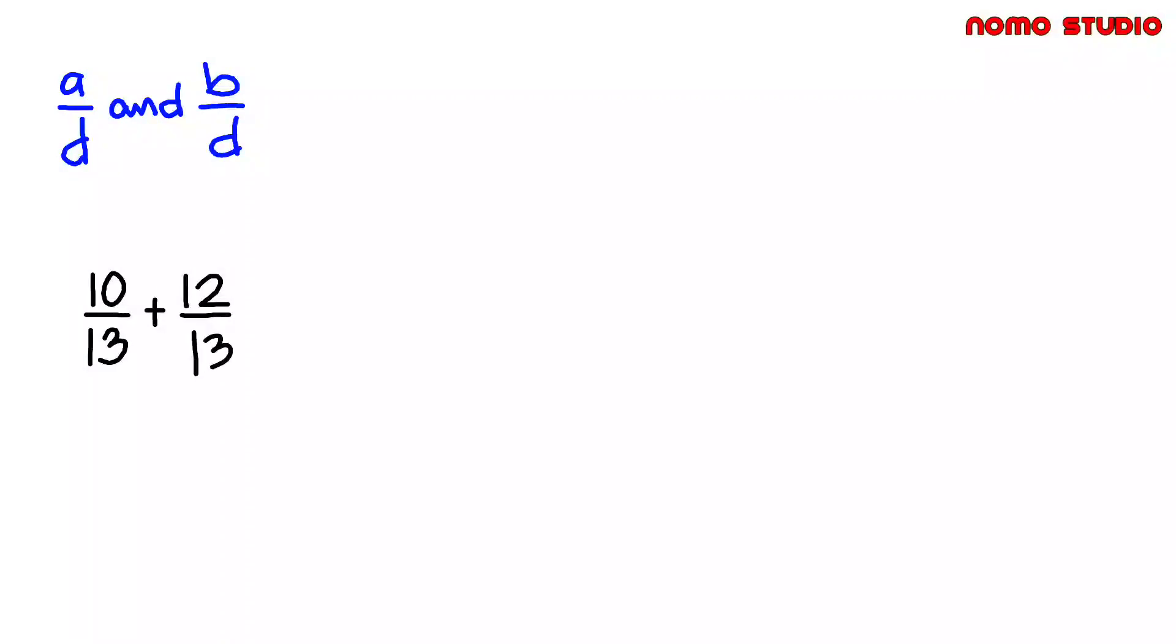Since they have the same denominator, let's just add the numerator, then copy the denominator. So the answer is 22 over 13. Remember to always reduce fractions to its lowest term. But here, this is already the lowest term.